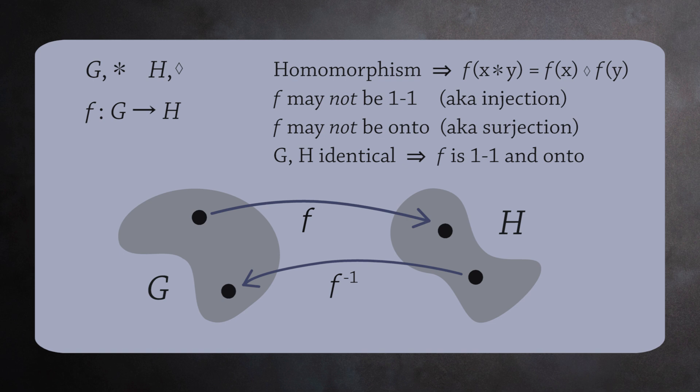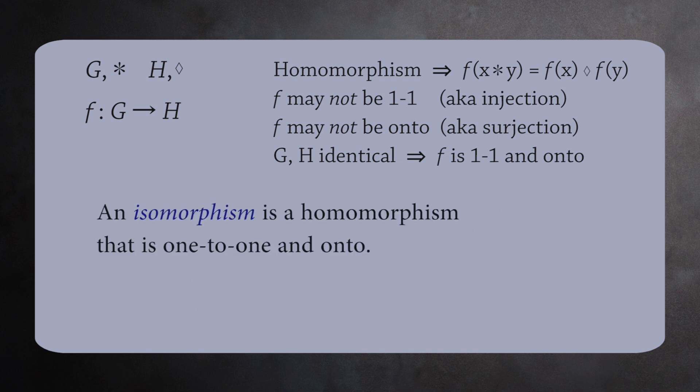This is a definition of an isomorphism. An isomorphism is a homomorphism that is one to one and onto. This can be said more briefly as an isomorphism is a homomorphism that is also a bijection. Let's now see some homomorphisms and determine if they're isomorphisms.